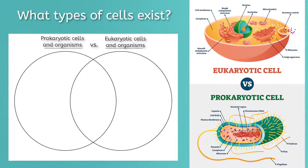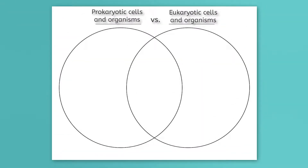As we wrap up this lesson, did we learn what we aimed to learn? Pause this video and try to complete this Venn diagram in a notebook or in your guided notes. Prokaryotic and eukaryotic cells both have the bits that unite all cells: DNA, a plasma cell membrane, a cytoplasm, and ribosomes. You could have also indicated that they're both, of course, cells.